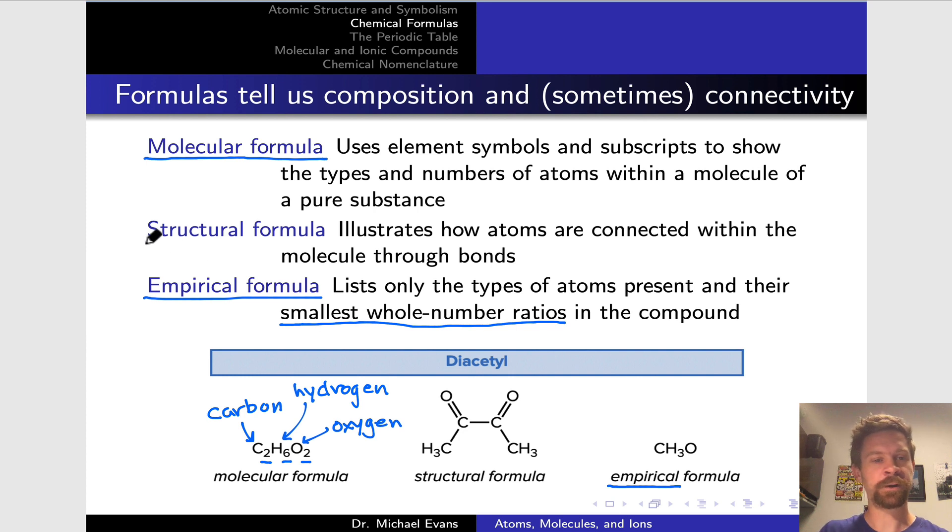Structural formulas provide us with information about how atoms are linked together through bonds and some information about where electrons are located in molecules. I don't want to go into too much detail on structural formulas at this point. This is the structural formula of diacetyl, and it tells us how the atoms are connected. For example, the oxygens are connected to the two carbons. There's a symmetry to this molecule with two identical halves.